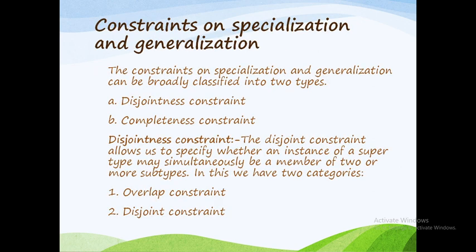The next concept is constraints on specialization and generalization. A constraint means it is a condition. Specialization uses a top-down approach and generalization uses a bottom-up approach. The constraints define what conditions we need to impose on specialization and generalization.